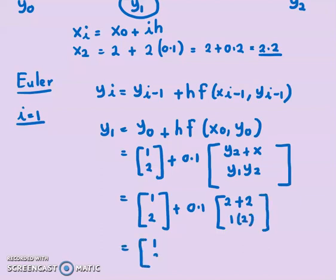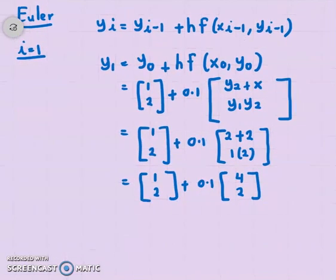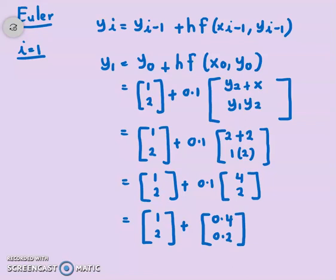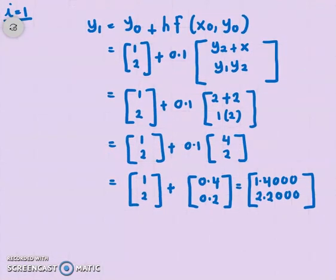Multiplying 0.1 by [4, 2] gives [0.4, 0.2]. So y1 equals [1, 2] plus [0.4, 0.2], which gives y1 equals [1.4, 2.2]. We have now obtained the first approximation y1.